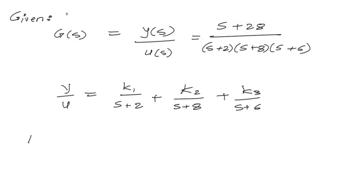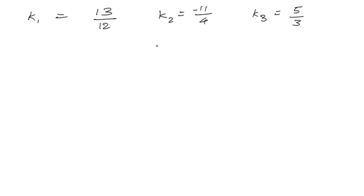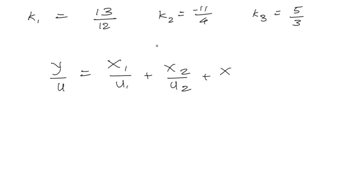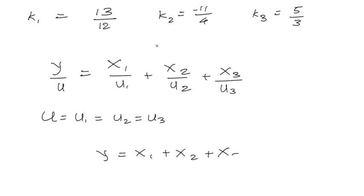We know the values: k1 is 13 divided by 12, k2 is minus 11 divided by 4, and k3 is 5 divided by 3. So now we get Y divided by U as x1 divided by u1, plus x2 divided by u2, plus x3 divided by u3, where u is equal to u1, which is equal to u2, which is equal to u3. Therefore, y would be equal to x1 plus x2 plus x3.